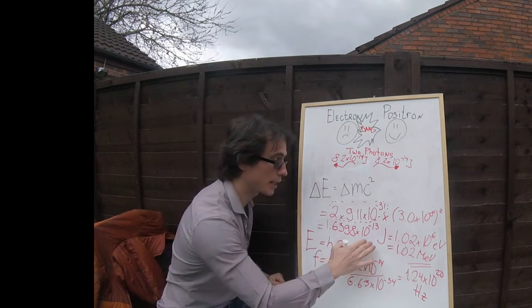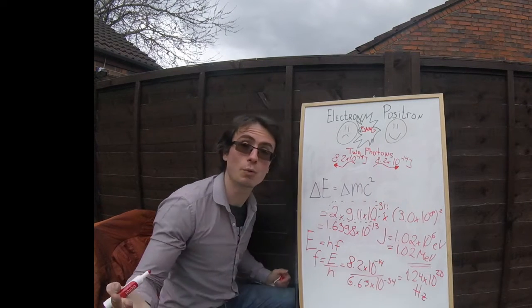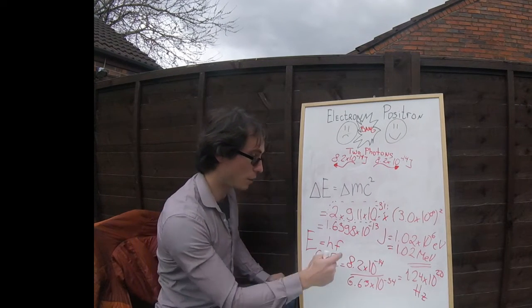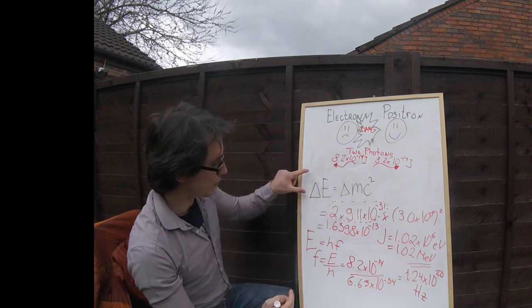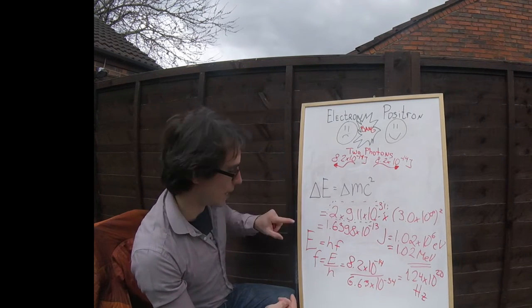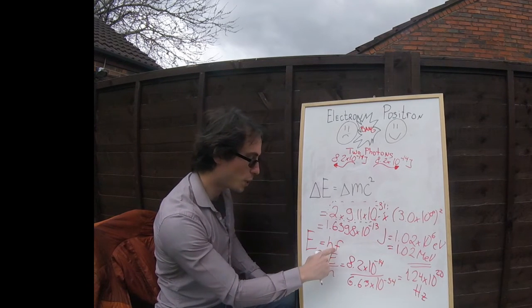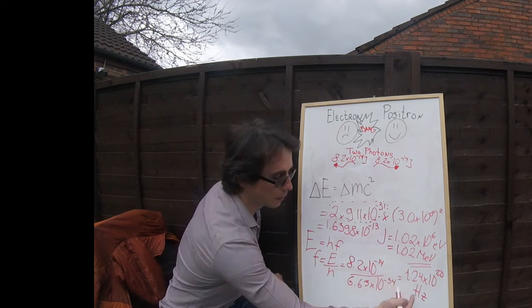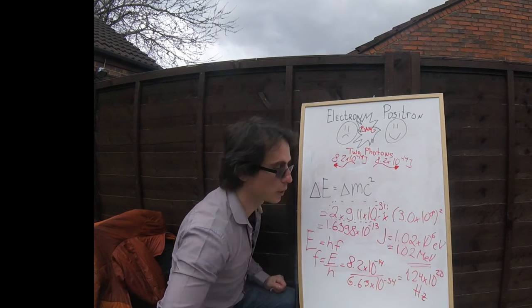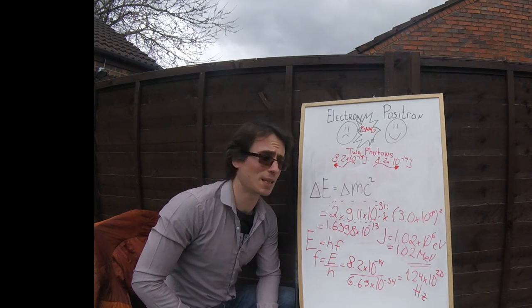If we calculate delta E, we're going to get that delta E is 1.02 mega electron volts. And what we've done then is we've subbed in this amount of energy into the photon energy equation over here. E is equal to hf. We've rearranged for the frequency and we've got an answer of 1.24 times 10 to the 20 hertz.